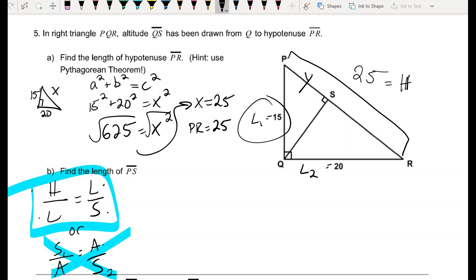So the first thing I want to identify is what are my labels. I know 25 is my big hypotenuse. And when I talk about legs L1 and L2, I'm talking about the outside of my right triangle. So I'm going to label that 15 as L1, and I'm going to label that 20 as L2. Now, if 15 is L1, the piece of the hypotenuse that's broken up by the altitude on the same side of leg 1 is going to be side 1.